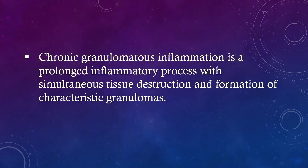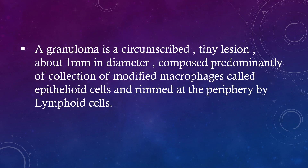Chronic granulomatous inflammation is a prolonged inflammatory process with simultaneous tissue destruction and formation of characteristic granulomas. A granuloma is a circumscribed tiny lesion about 1 mm in diameter composed predominantly of a collection of modified macrophages called epithelioid cells, and rimmed at the periphery by lymphoid cells.